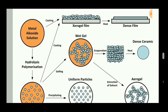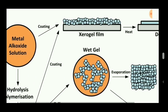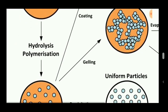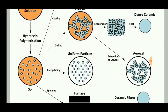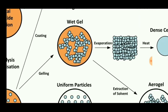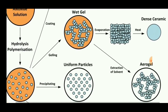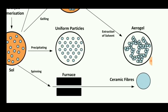When metal alkoxide solution is the base component, it is coated on the sol-gel film and when it is heated it forms a dense film-like structure. When the metal alkoxide solution undergoes hydrolysis under water, the sol is precipitated and it forms uniform particles with a gel-like appearance as a wet gel. When it is heated it forms a dense ceramic. Then when the sol is heated in a furnace by the process of spinning operation, it forms ceramic fibers.